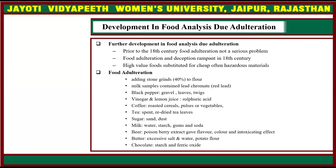Further development in food analysis arose due to adulteration. Prior to the 18th century, food adulteration was not a serious problem. Food adulteration and deception became rampant in the 18th century, when high-value foods were substituted for cheap, often hazardous materials.